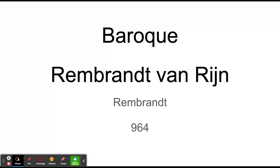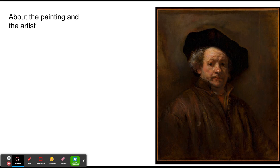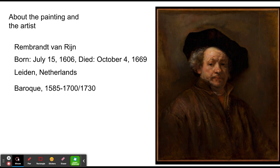All right, this is Rembrandt van Rijgen by Rembrandt, a self-portrait. This was made by Rembrandt, who was born on July 15, 1606, and died on October 4, 1669, in Leiden, Netherlands.